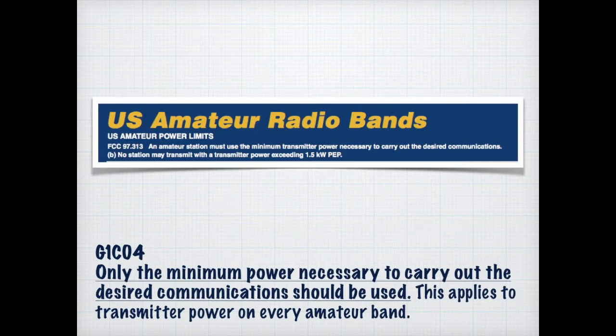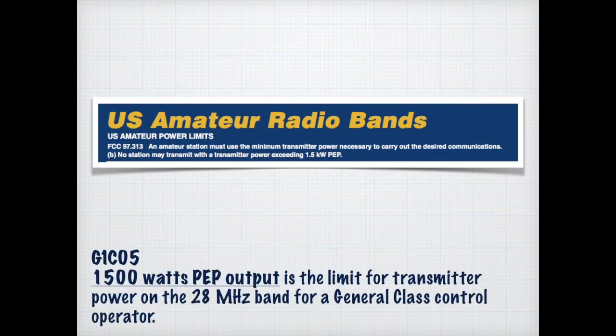Only a minimum amount of power necessary to carry out the desired communications should be used, and this applies to transmitter power on every amateur band. Although typically most people just leave their radio at 50 watts or 100 watts or whatever the default is, we should really cut back and be conservative and only use the power required. 1,500 watts peak envelope power is the limit for transmitter power on the 28-megahertz band, or 10-meter, for a general class control operator.